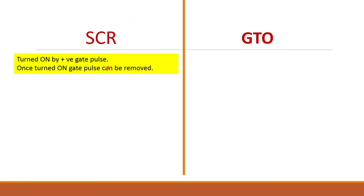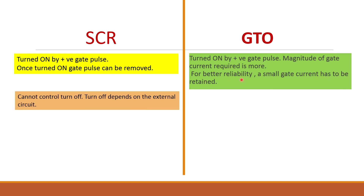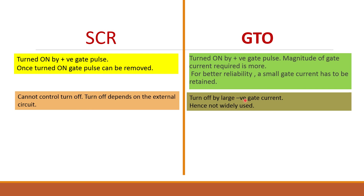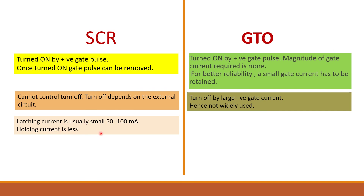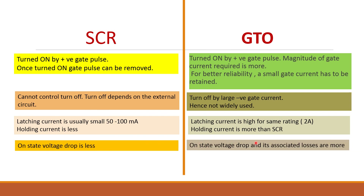Here is a comparison between SCR and GTO. An SCR can be turned on by a positive gate pulse and once turned on you can remove the gate pulse, but the GTO also turns on with a positive gate pulse — however, the magnitude of gate current required is more, and you must maintain a small gate current for better reliability. You cannot control the turn-off process in an SCR, whereas the GTO can be turned off by giving a large negative current, which increases complexity in the gate drive circuit. Latching current and holding current are small in SCR but very high in GTO, and the on-state voltage drop is less in SCR while it is high in GTO.